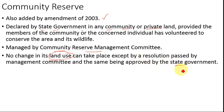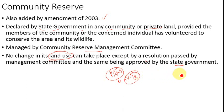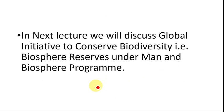We have now covered the protected area network declared for conserving wildlife and flora and fauna under national initiatives. These national initiatives are covered under the Wildlife Protection Act, with four types of protected areas: national parks, wildlife sanctuaries, conservation reserves, and community reserves. In the next lecture we will cover the global initiative to conserve biodiversity — that is, biosphere reserves under the Man and Biosphere Programme — which is also a very important topic for your prelims as well as mains.